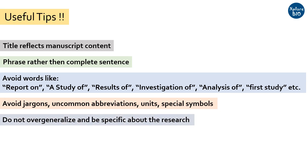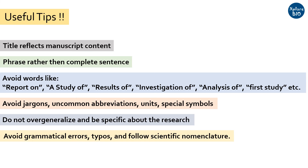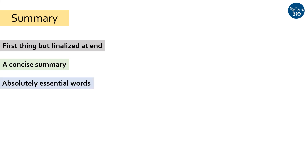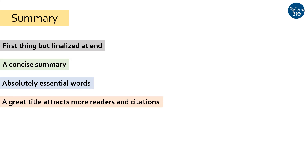Try not to overgeneralize the title; try to be as specific as possible about your research. Avoid grammatical errors, typos, and follow scientific nomenclature. To sum up, the title is the first thing you see in a paper or thesis, but usually a good title is finalized at the end of the research. It is a concise summary of your whole work and includes only absolutely essential words. Choosing a perfect title is essential to get more reads and citations. Framing a title can be really challenging — you may need to frame several titles before coming up with the perfect one, but making the effort will definitely benefit you.